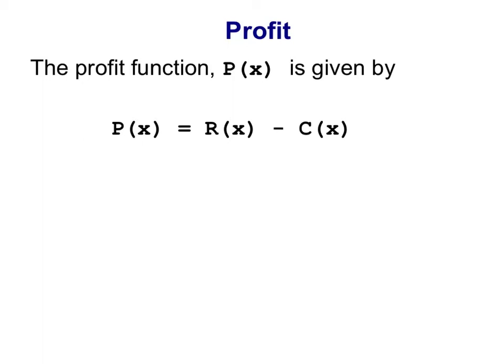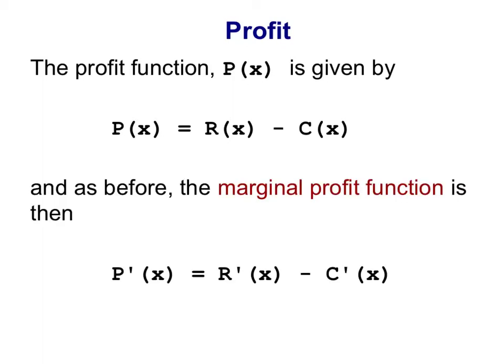Now in this case we're talking about capital P of X. This is not the demand equation, this is a profit function, capital P of X. And the way we make that function is simply take our revenue function and subtract our cost function. We can also talk about marginal profit, which is the profit we'll make by producing and selling that next item. And because we have these rules for derivatives, the marginal profit is simply the marginal revenue minus the marginal cost.